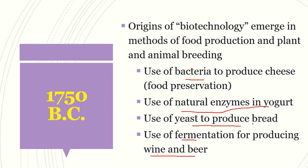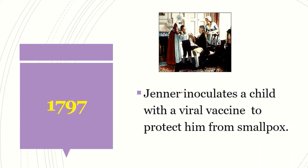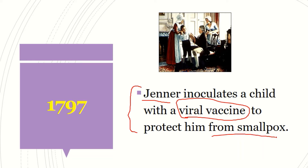We were able to manipulate biological systems to develop products from both plant and animal breeding, food production, and other uses of biotechnological products. Then we also had vaccines being developed to solve human diseases. Edward Jenner inoculated a child with a viral vaccine to protect him against smallpox — you can see him inoculating the boy in the image — and that was the advent of the vaccine against smallpox.